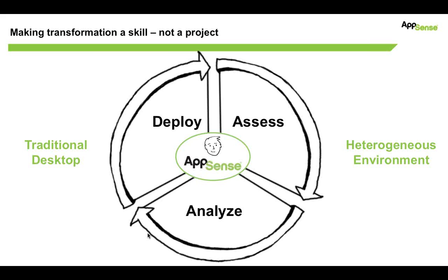We see three key ingredients to this competency around transformation and making a lifecycle approach part of your way of doing things. The first is to really assess what you have today. The next is to analyze what you find there and, in the process, chart your course for where you want to go moving forward — which could be a combination of physical PCs, VDI, terminal services, or application virtualization. And finally, once you've created your blueprint, you need a mechanism for making it happen: the deploy element of the lifecycle.